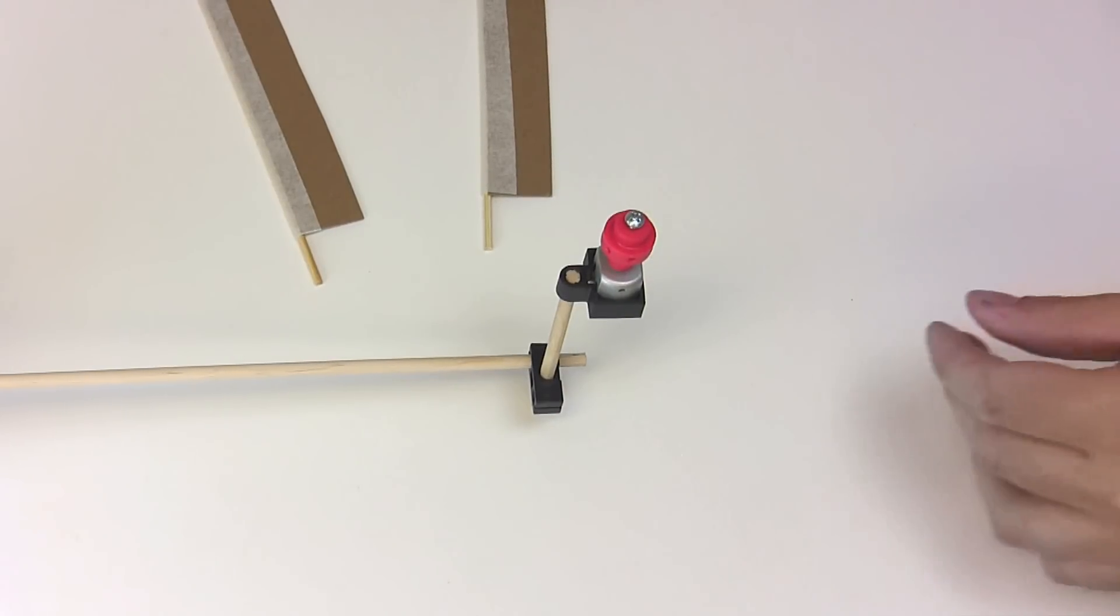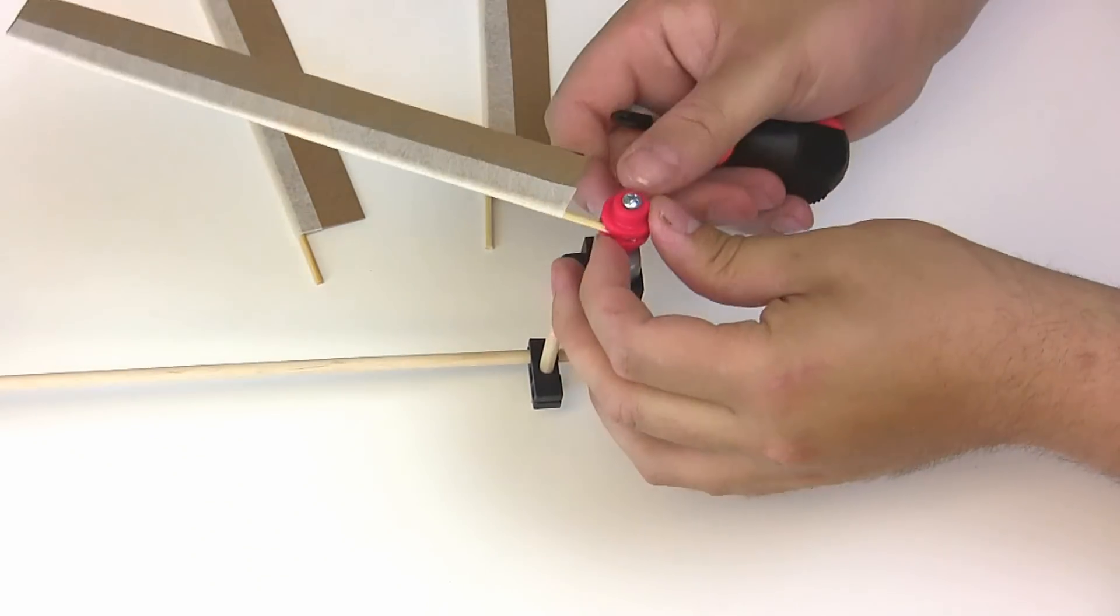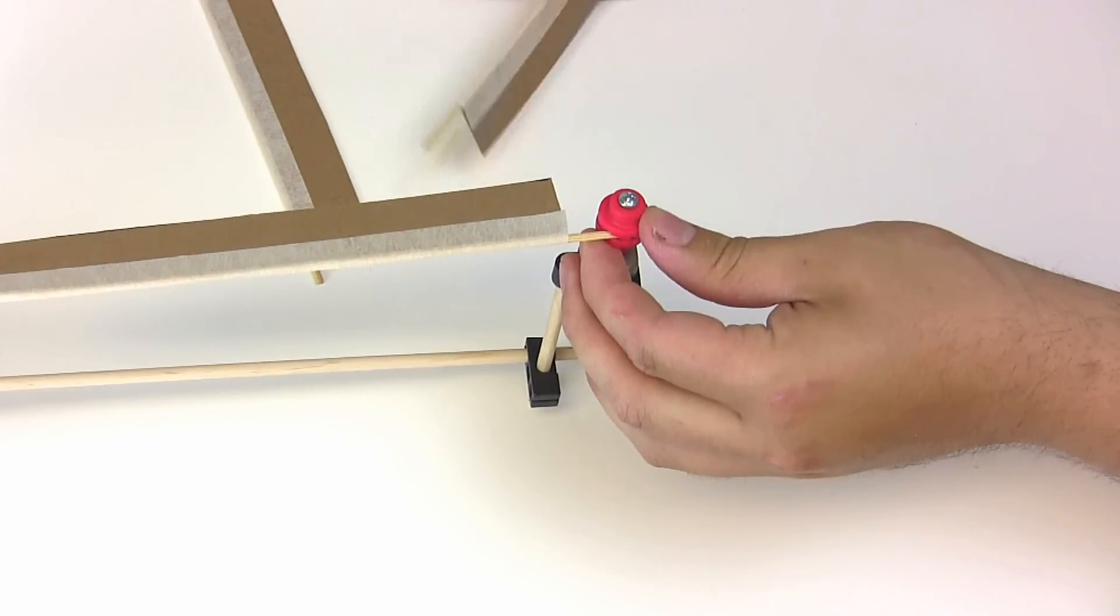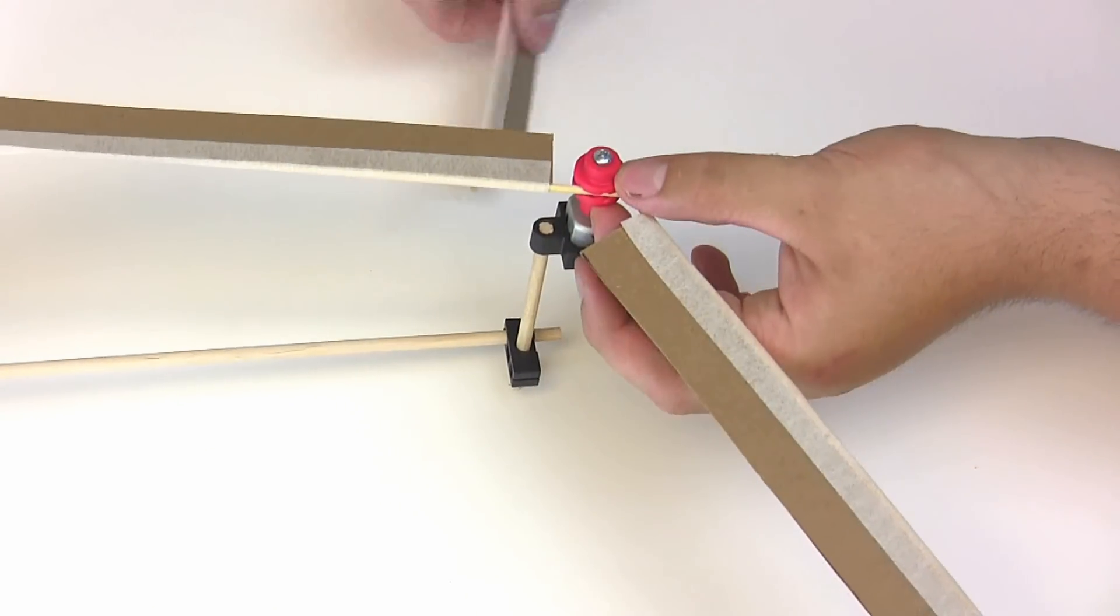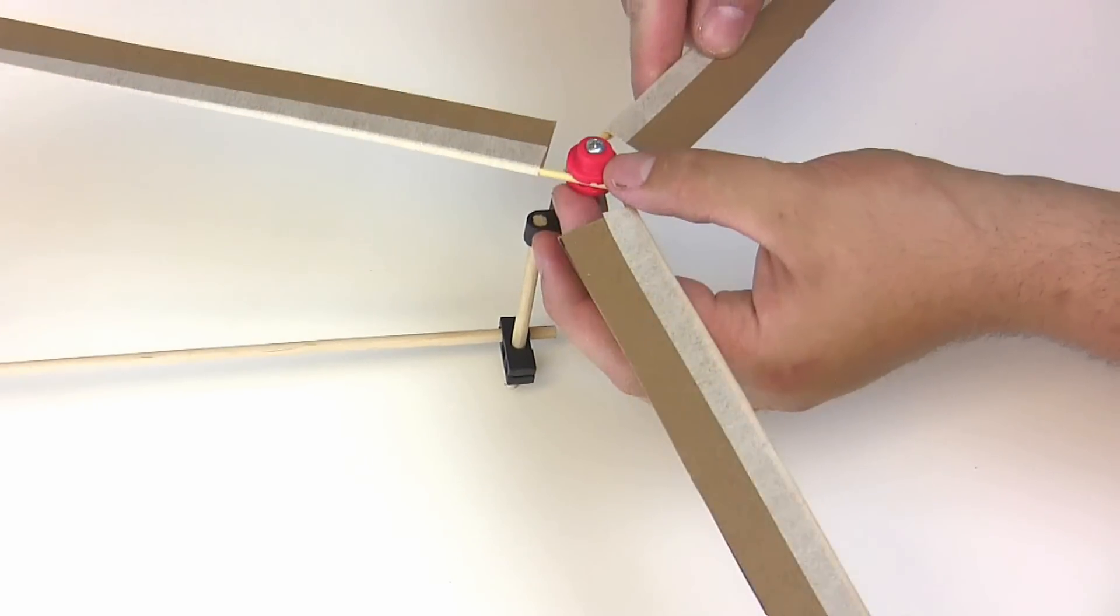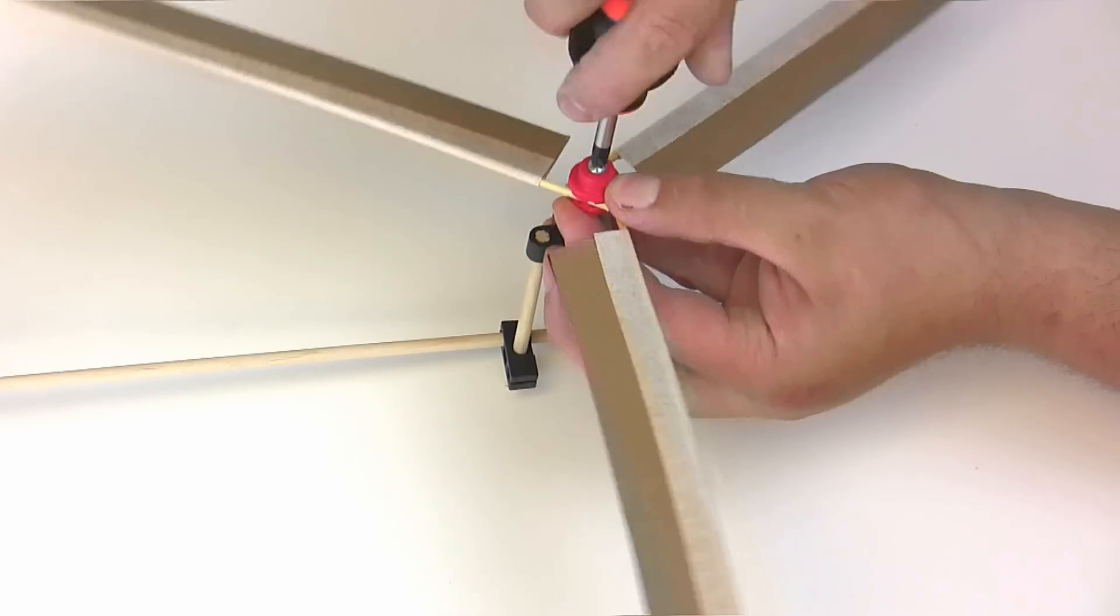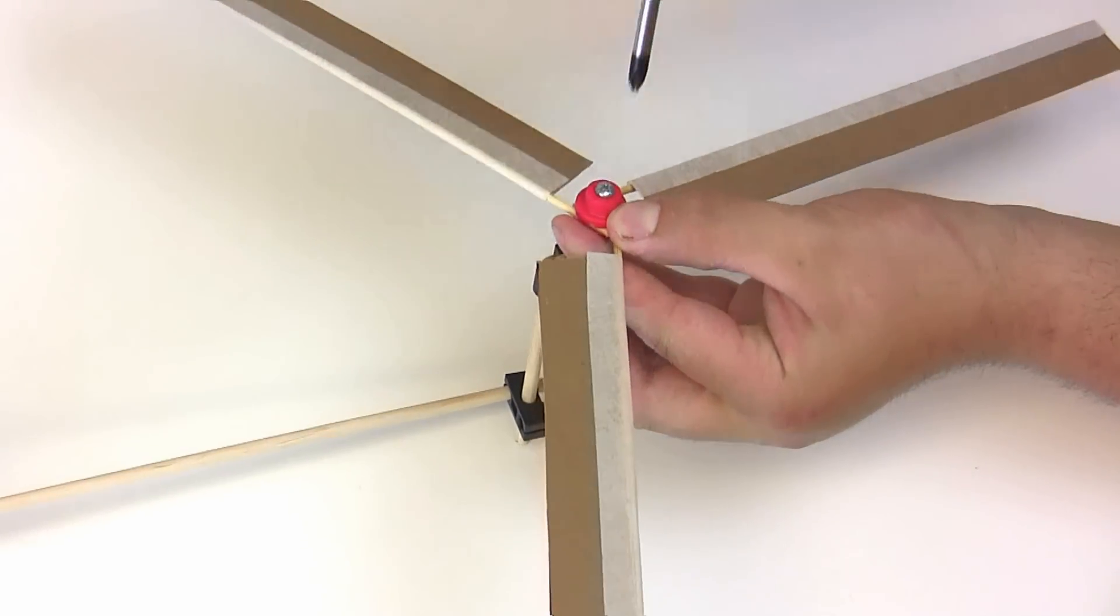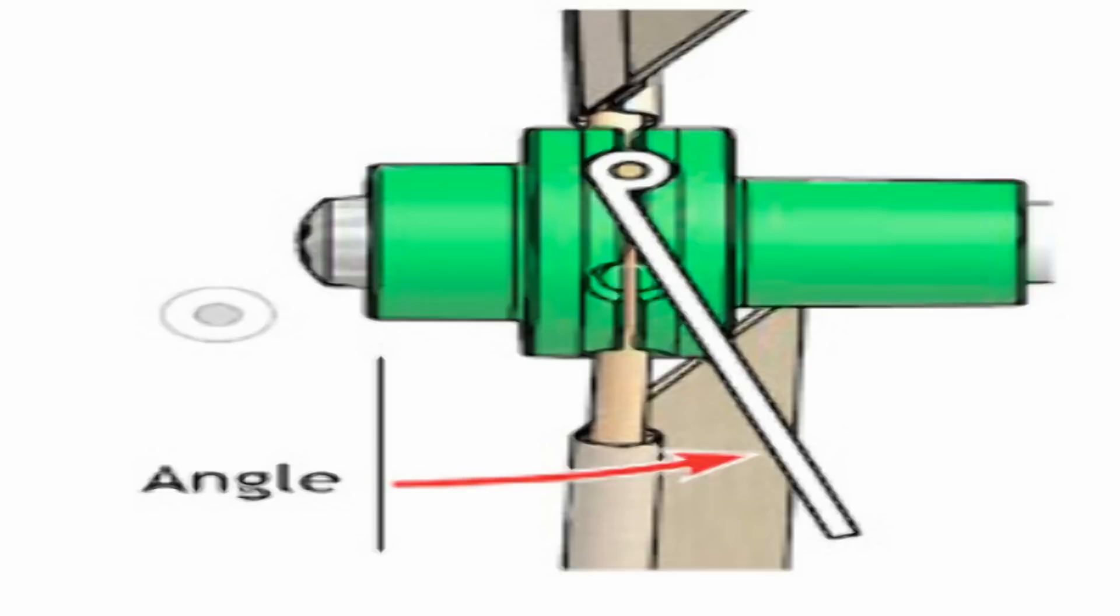Now that we have all the blades made, it's time to put them into the hub. Insert your 3 blades into the hub. Tighten down the screw at the end. Make sure your blades are equally spaced out. All you have to do is adjust the blades so they're all at the same angle. Your mini wind turbine stand is complete.